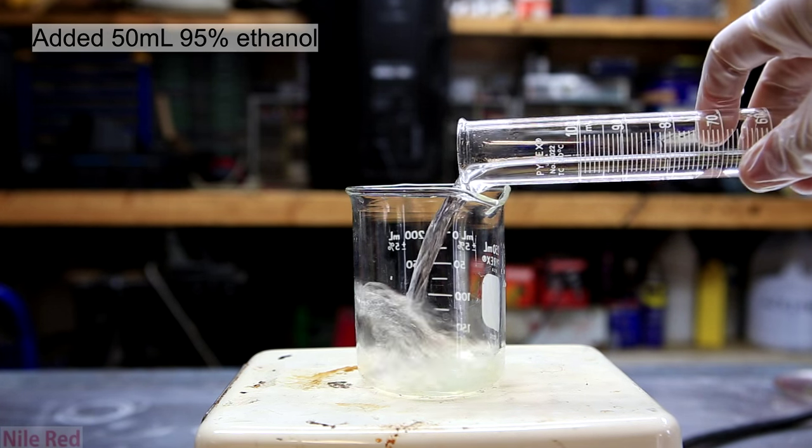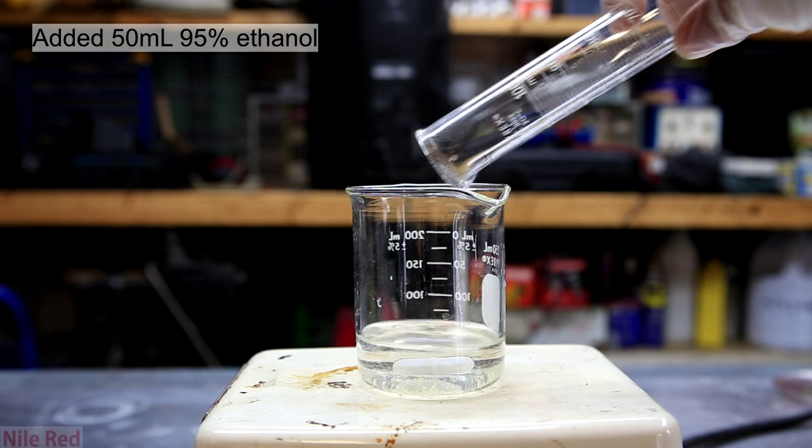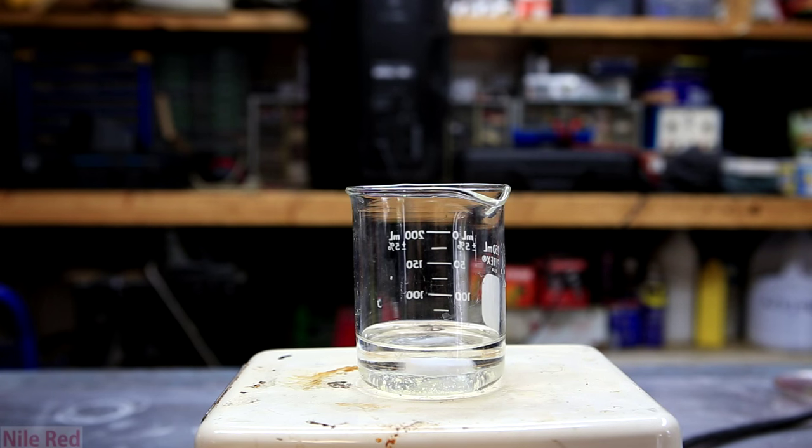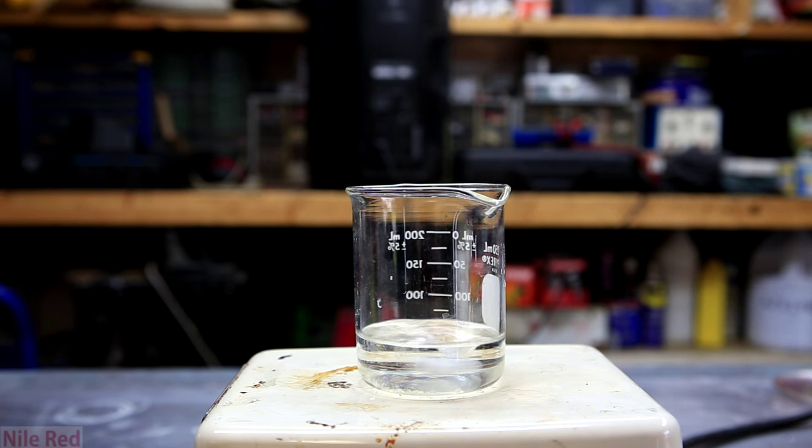It is then dissolved in 50 milliliters of 95% ethanol. It takes a little while but it's allowed to stir until all of the phenolphthalein has fully dissolved.